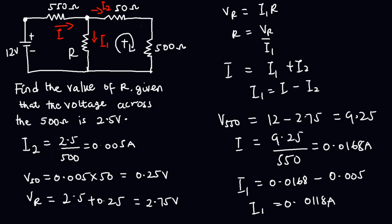Now that we know I1, we can find R. R equals Vr divided by I1. We know Vr is 2.75 volts and I1 is 0.0118 Amperes. When you simplify this, you get the value of R to be 233 ohms. So that is the value of R.